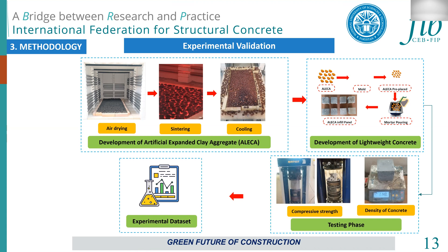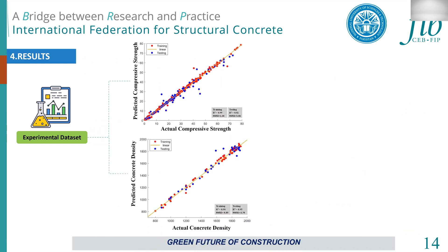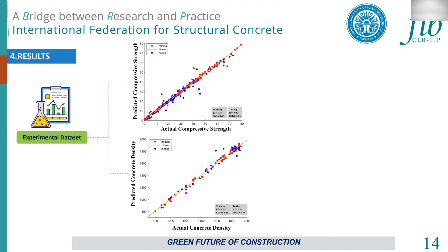After developing the experimental dataset, it was given to the machine learning models for training and testing again. The results were very good: training R-squared for compressive strength was 0.99 and testing was 0.92. For concrete density, R-squared was 0.98 for training and 0.95 for testing.